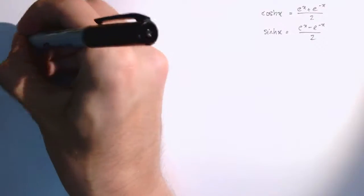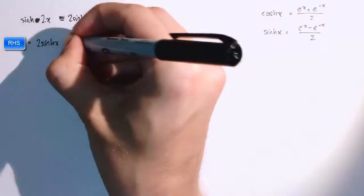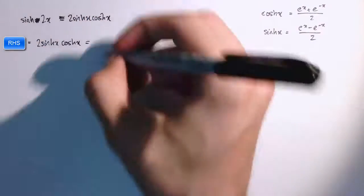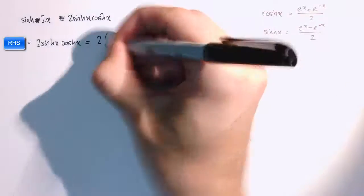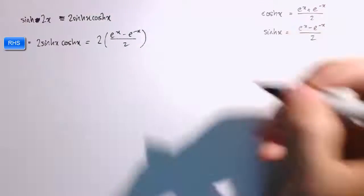So, starting with the left-hand side, that's 2 times sinh of x times cosh of x and that's equal to 2 then times sinh of x is e to the x minus e to the minus x divided by 2.